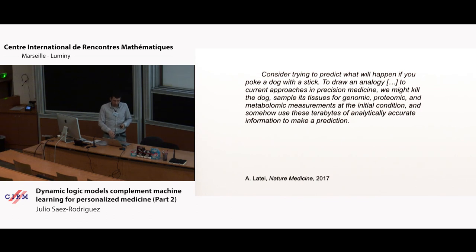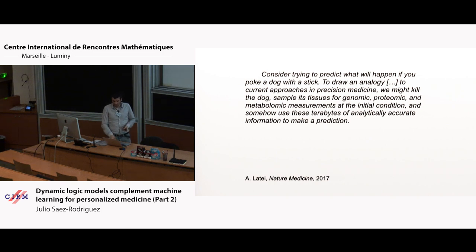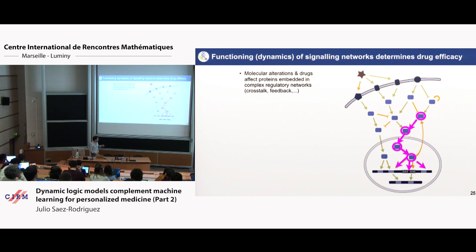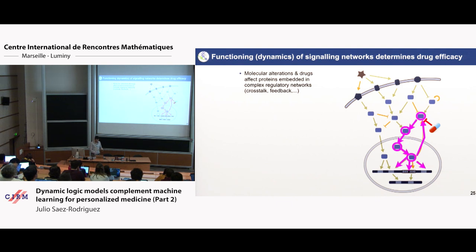Somebody put this in a very eloquent manner — Tony Letai from Boston — who said: consider trying to predict what happens if you poke a dog with a stick. The analogy to what we've been doing is: kill the dog, make all sorts of omics, and use that huge dataset to predict what happens when you hit the dog with a stick. But the functional approach is: hit the dog with a stick and see what happens. It's very hard to predict the effect of the drug simply from basal data. Whether a drug works or doesn't work is a dynamic process — you may have a hyperactive pathway, hit it with a drug, and there are feedbacks and compensatory pathways that are intrinsic dynamic processes, very hard to see unless you have dynamic time series response data.